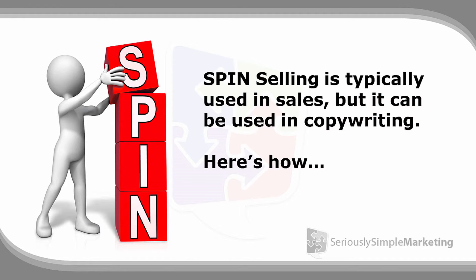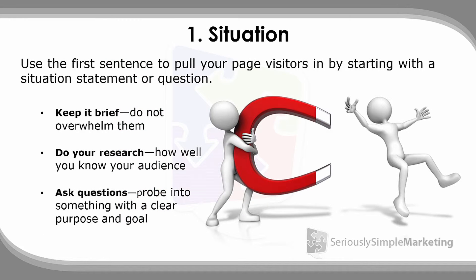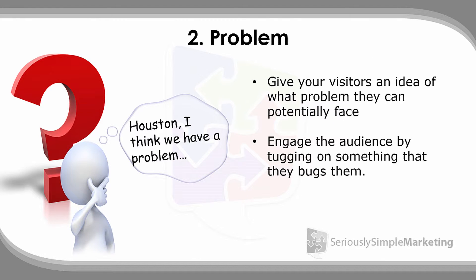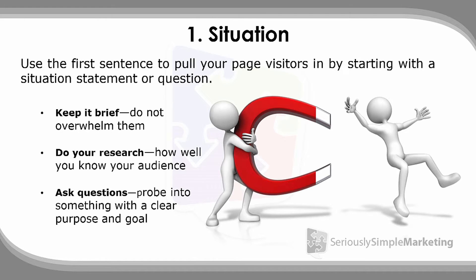SPIN Selling is typically used in sales, but we can use it in copywriting and when writing our blogs. First, think about the situation. This is where you use the first sentence, sentences, or paragraphs to pull in your page visitors. Start with a situation statement or question, keep it brief so you don't overwhelm them, do your research so you know your audience, and confirm to the audience that yes, this is them. For example: 'Is it difficult for you to lose weight?' — that's a situation question that gets inside the prospect's head.